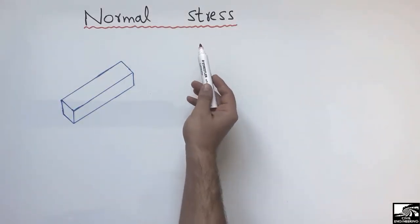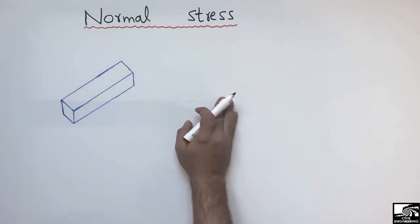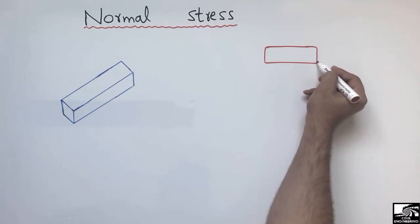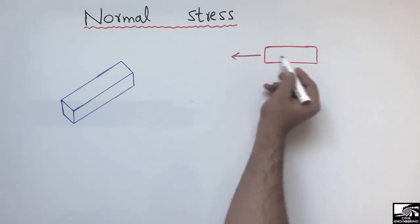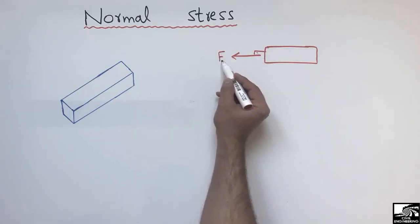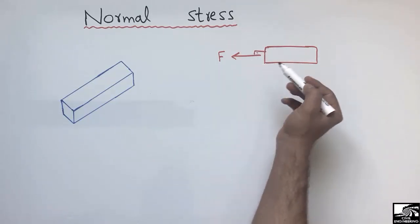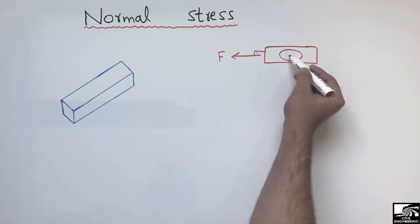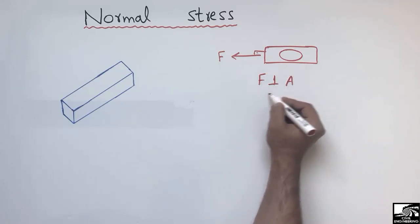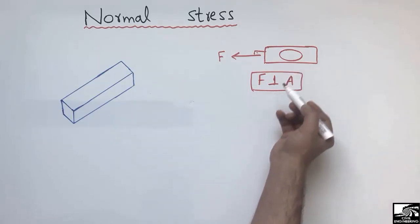Normal stress is a special type of stress created inside an object due to a force acting perpendicular to the cross-sectional area. If a force makes an angle of 90 degrees with the object, the stresses created inside that object are called normal stresses. The force must be perpendicular to the cross-sectional area for the stress to be classified as normal stress.